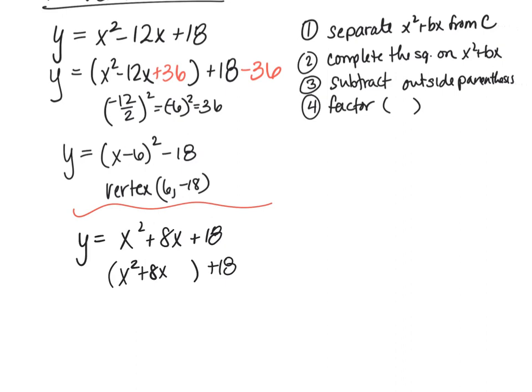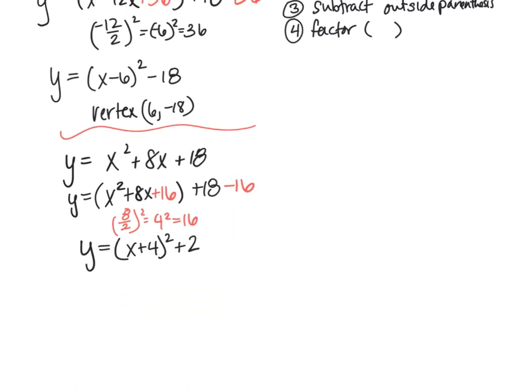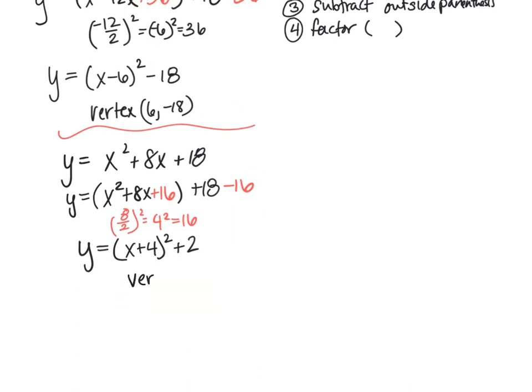We're going to complete the square on the inside. 8 divided by 2 squared is 4 squared, which is 16. So we're going to add 16 inside, and we're going to subtract 16 outside. That keeps the equation balanced. And then we get y equals factor x squared plus 8x plus 16 to x plus 4 squared. And 18 minus 16 is plus 2. So now our equation is in vertex form, and I identify our vertex as negative 4, 2.